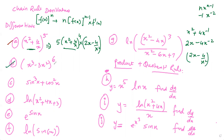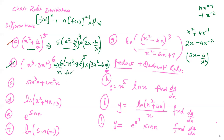Coming to the second one, it's the same thing: 6 times (x³ minus 3x²) to the power 5, into the derivative of x³ minus 3x², which is 3x² minus 6x. So it's n times f(x) to the power n minus 1, times f'(x).